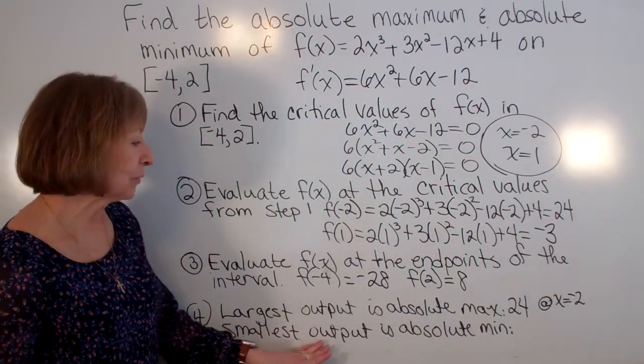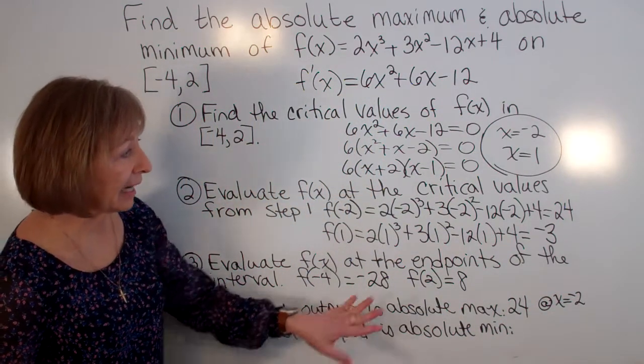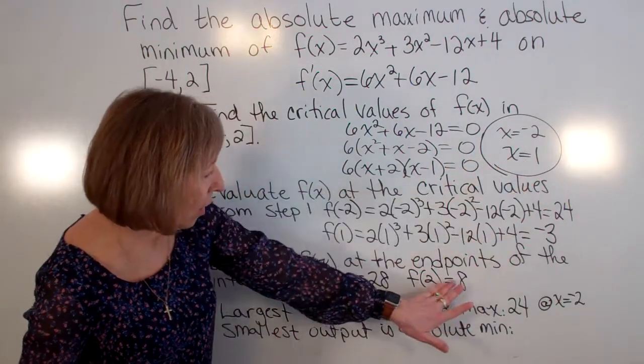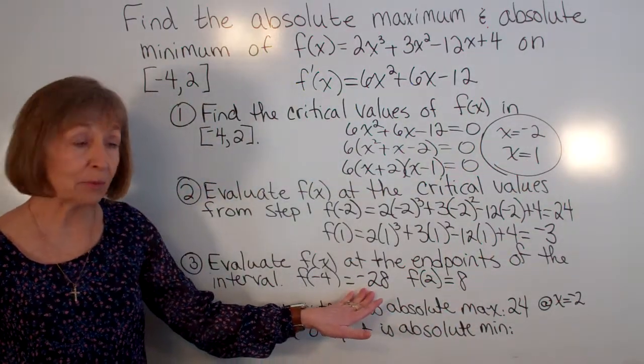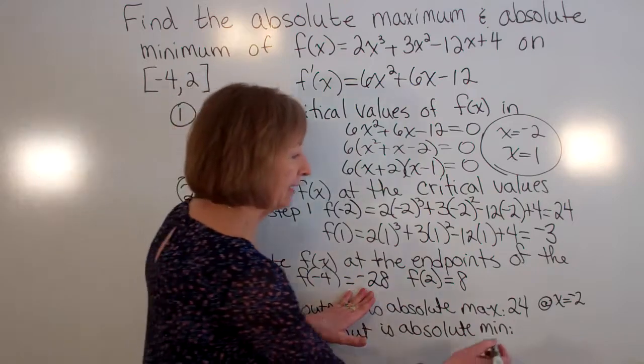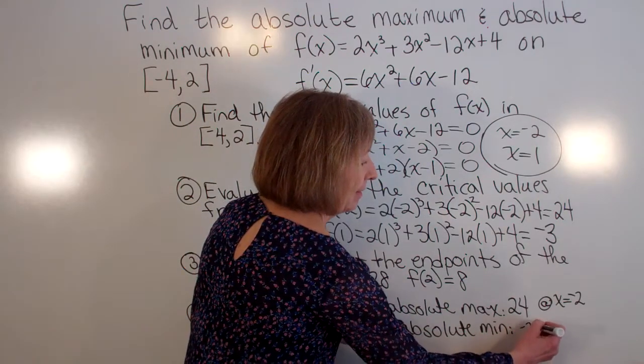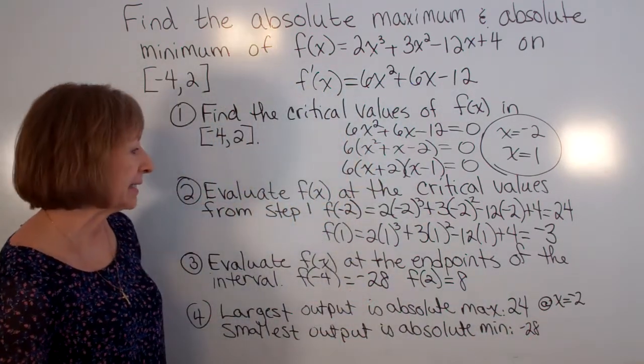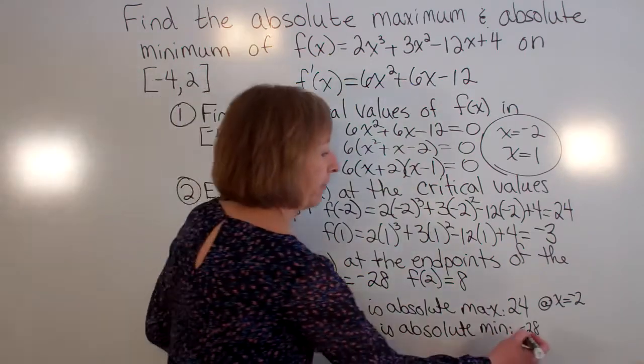And then my absolute min is the smallest output. So looking at all of those numbers, the smallest output is -28. And it happens at an x value of -4.